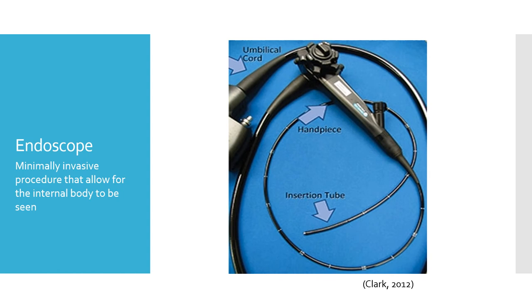Endoscope. An endoscope is a minimally invasive procedure which allows the internal body to be seen. Gastrointestinal endoscopy is the most commonly used endoscope in veterinary practice, and the endoscope can be used to investigate the main body systems. It can be used during operations to see the internal body area of the animal.